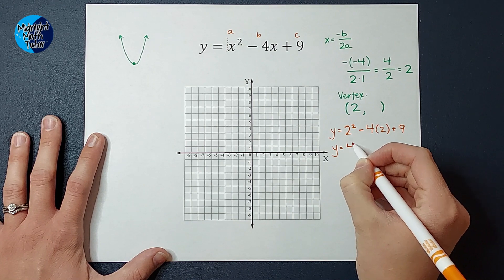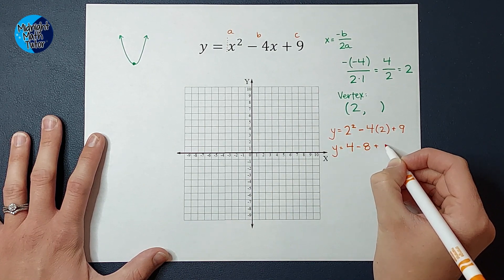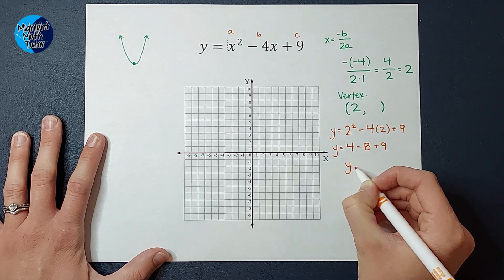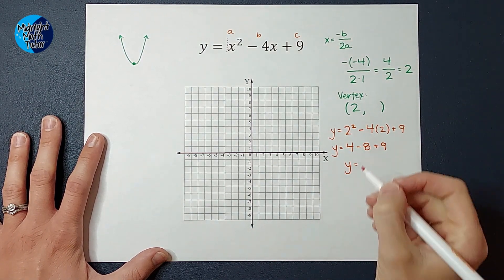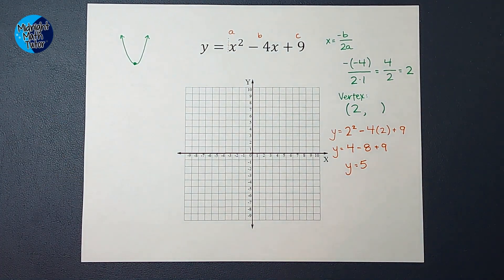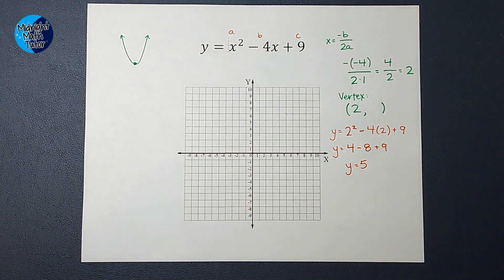So 2 squared gives me 4, minus 4 times 2 is 8, plus 9. Then we have 4 minus 8 plus 9, which gives me 5. So that is the y value in my vertex.